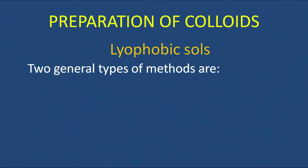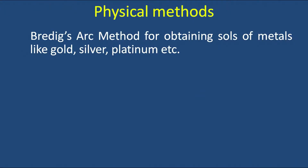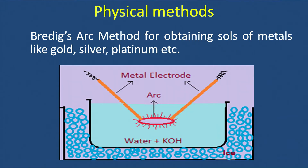Lyophobic sols are difficult to prepare, so two general types of methods are used: physical methods and chemical methods. In physical methods no chemical changes take place; in chemical methods we make use of chemical reactions. One very common physical method for preparation of sols of metals is Bredig's arc method, used to prepare sols of gold, silver, platinum, and similar metals.